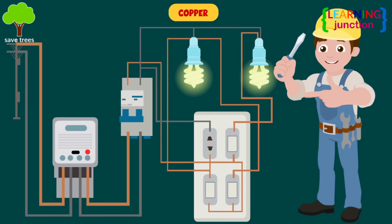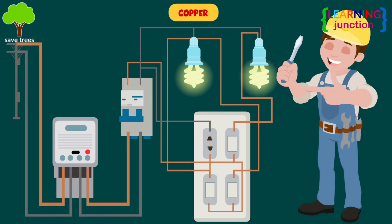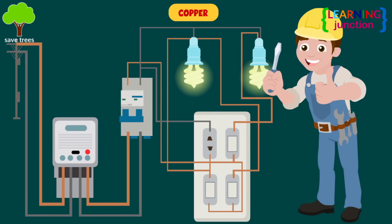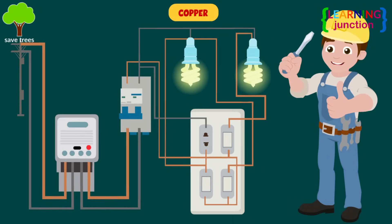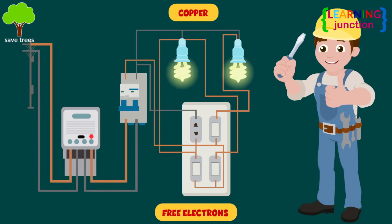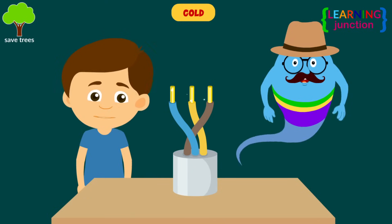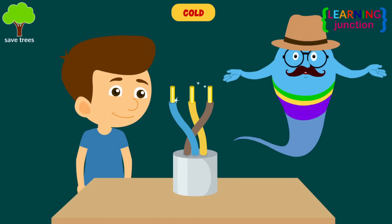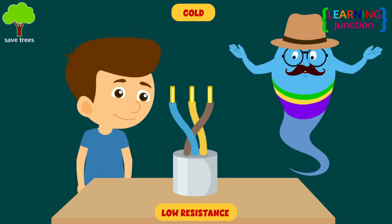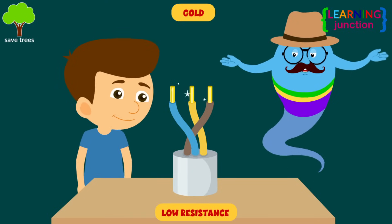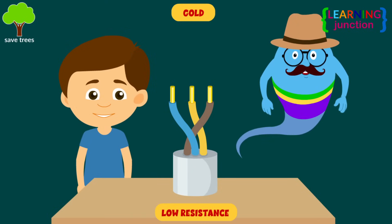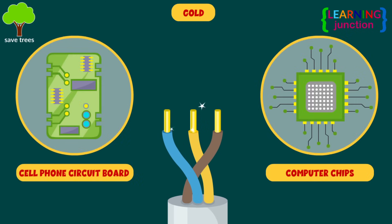Copper — home wiring is usually made of copper because it has a good amount of free electrons which can conduct electricity. Gold — it has low resistance, but gold is very expensive. It's used in cell phone circuits and computer chips.